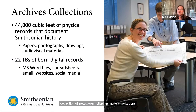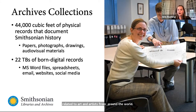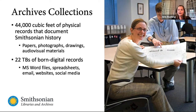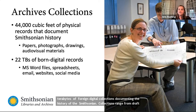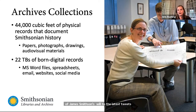The Smithsonian Institution Archives holds more than 44,000 cubic feet of physical archival collections and more than 22 terabytes of born-digital collections, documenting the history of the Smithsonian and its people, buildings, programs, and research. Our collections range from a draft of James Smithson's will to the latest tweets from the museums. In addition, we have over 40,000 digitized images available on our website and a growing amount of digitized field books, correspondence, and other materials.